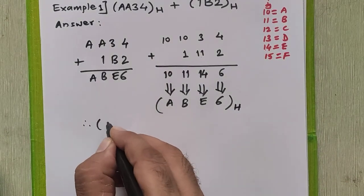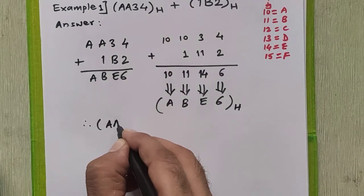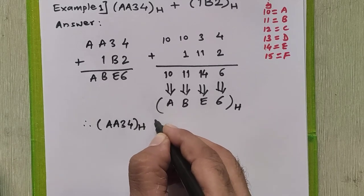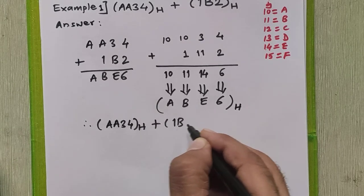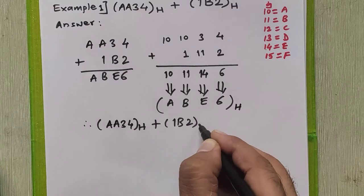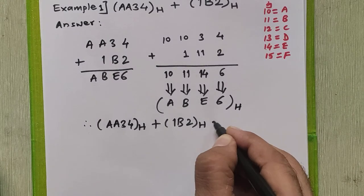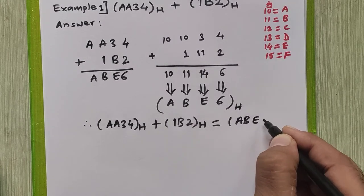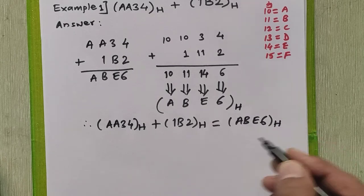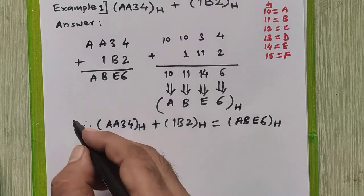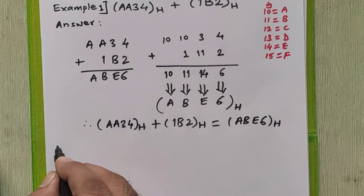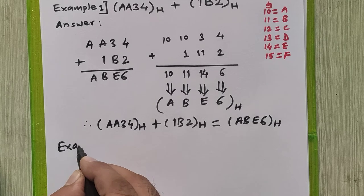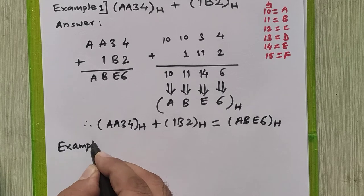Therefore, we can say that AA34 in hexadecimal plus 1B2 in hexadecimal equals AB E6 in hexadecimal. We will see one more example now to understand this direct addition of hexadecimal numbers.